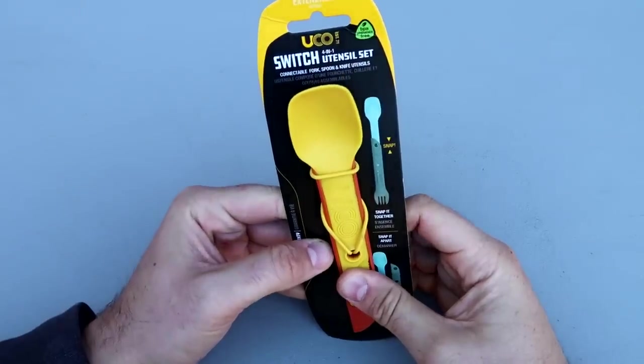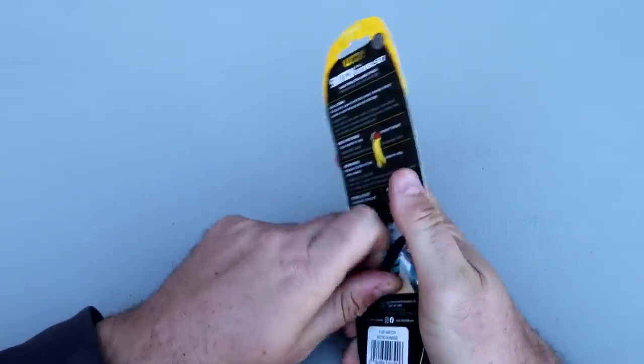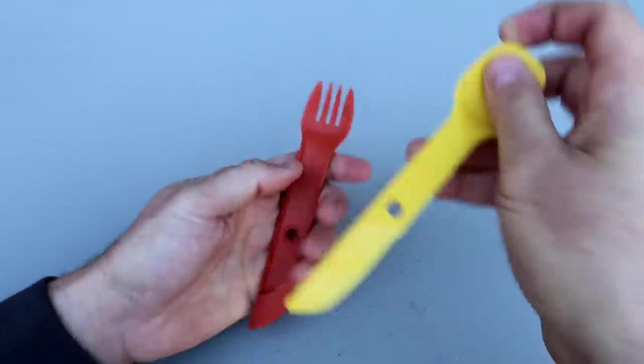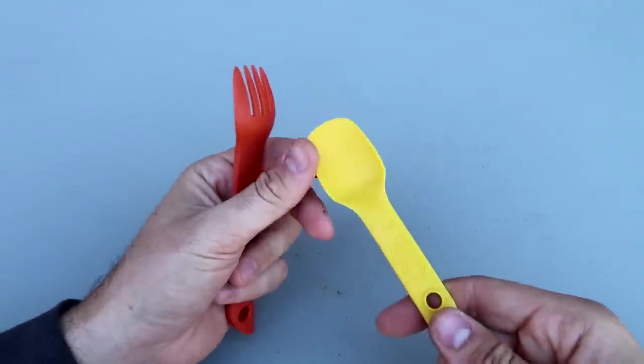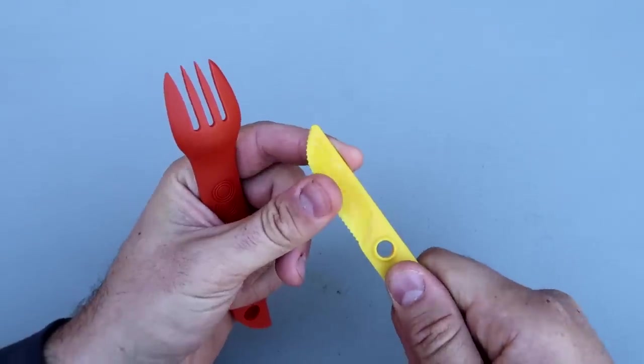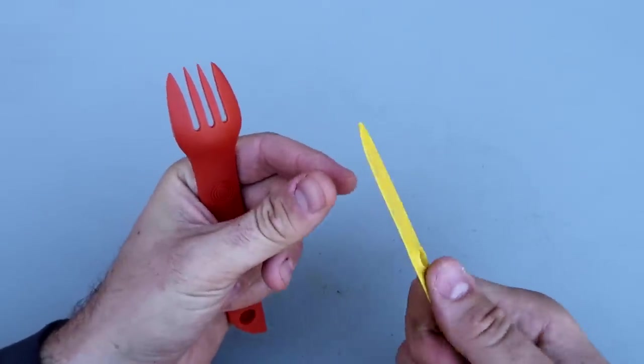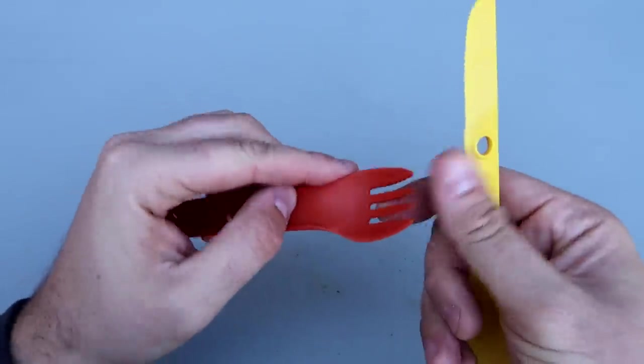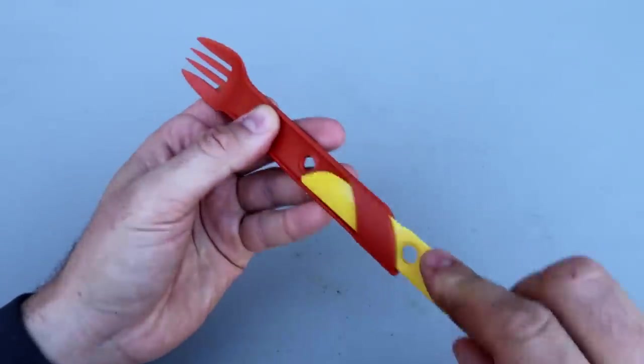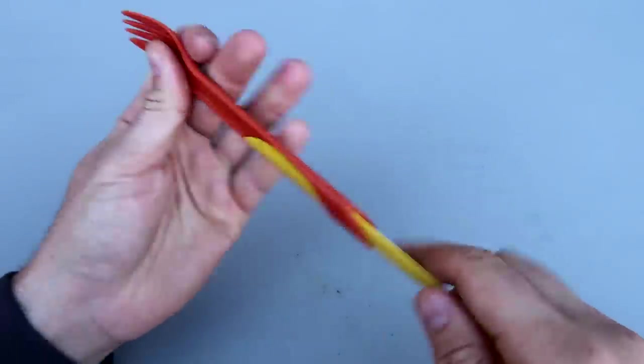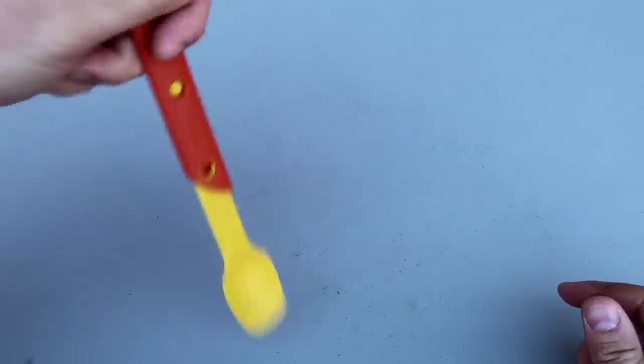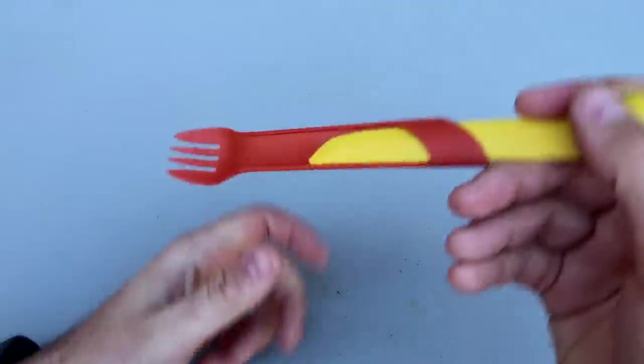UCO switch utensil set. So what's so special about this? A camping fork and a knife. First of all, it comes out. You have right here a spoon, a really nice deep spoon. A knife like a butter knife, plastic one - I think it could cut the steak pretty good. There is a really nice fork. And if you want to plug it in this way or this way, this way it locks in.